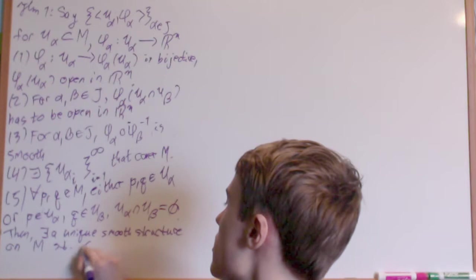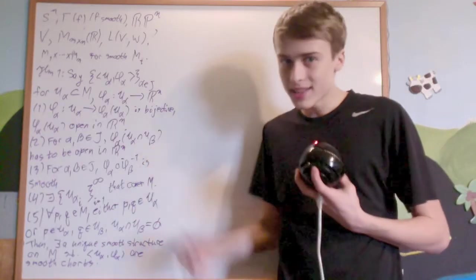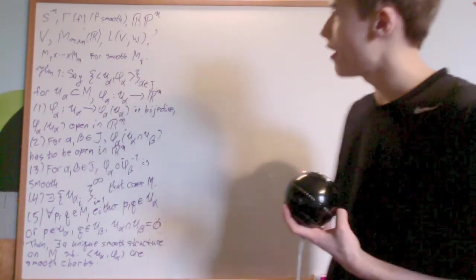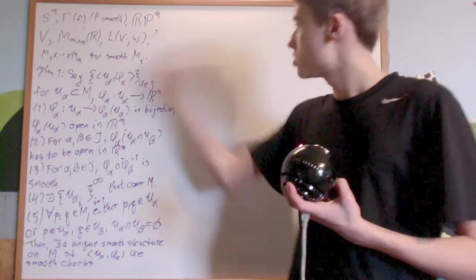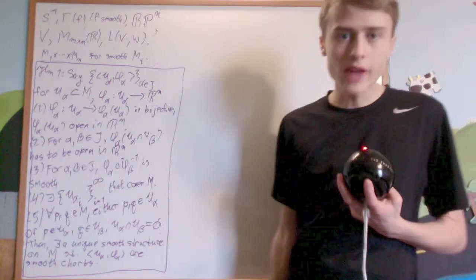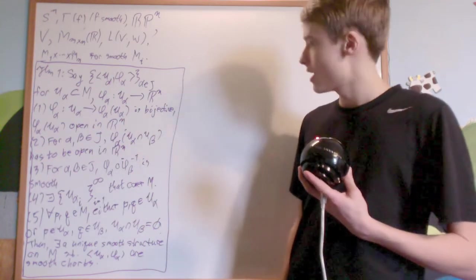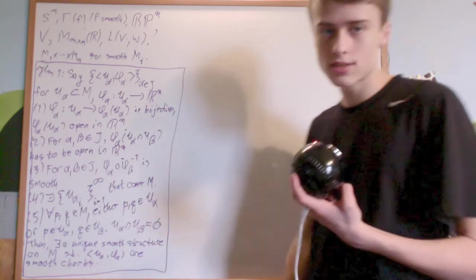Then, there exists a unique smooth structure on M, such that U_alpha, phi_alpha are smooth charts. So, what did I do here? Well, I just made a list of things that need to be true in order for this collection of what we want to be smooth charts, for there to be a unique structure on M, such that those are smooth charts. So we just took what we want our structure to be, and we made that our structure. The proof here is really easy. It's all spelled out right here. What you have to do is construct the topology on M, and then prove that those are smooth charts, and then you're good. I'll leave that proof to you. If you want to answer, leave your answers in the comments below.